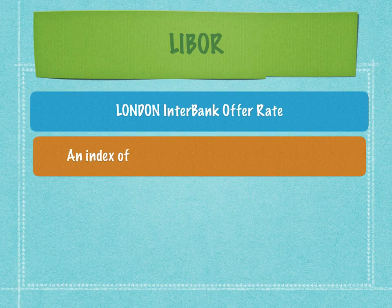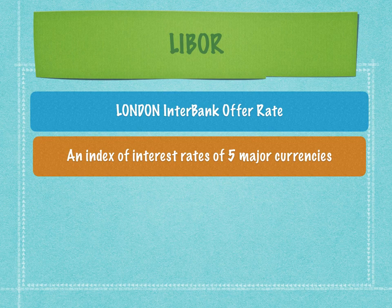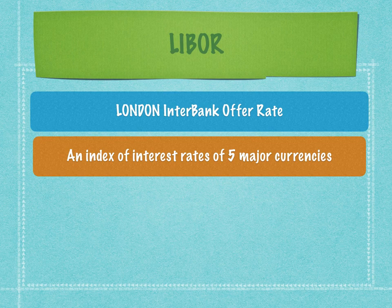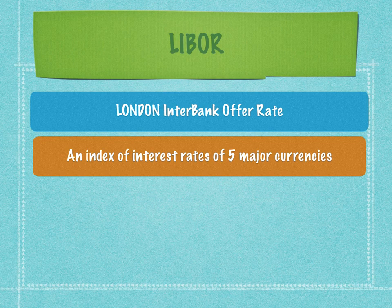LIBOR stands for London Interbank Offer Rate. It is the interest rate at which one bank lends to another bank across maturities in different currencies. As the term itself suggests, this interest rate is determined in London. It is between two banks — a rate at which one bank will lend to another bank on an unsecured basis. Hence the term LIBOR.